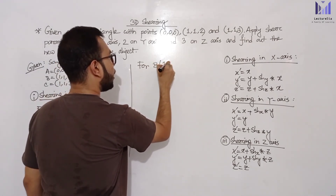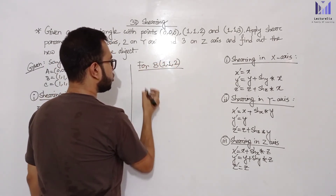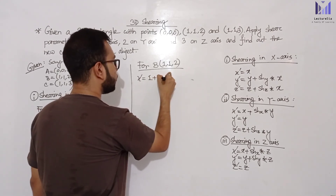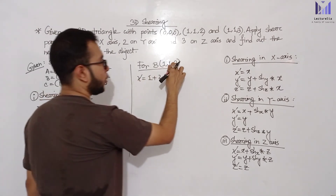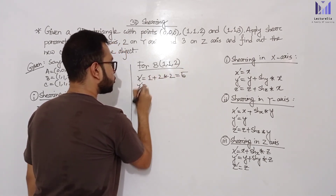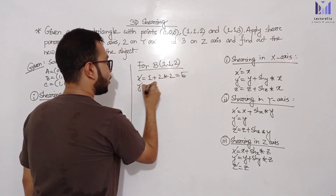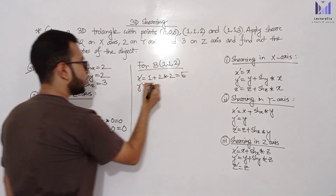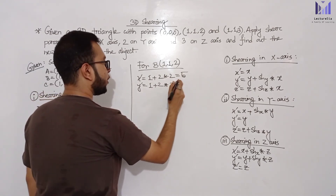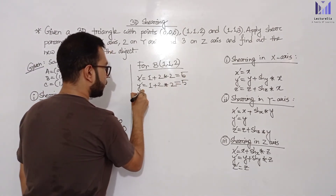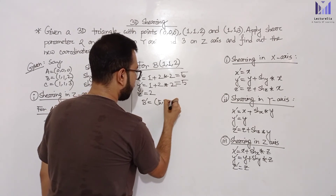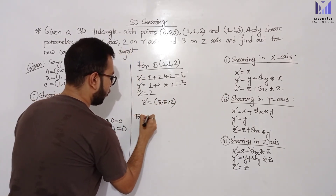For point B (1, 1, 2) under shearing in Z-axis: X prime equals X which is 1 plus shearing parameter X of 2 multiplied with Z of 2 — 1 plus 4 equals 5; Y prime equals Y which is 1 plus shearing parameter Y of 2 multiplied with Z of 2 — 1 plus 4 equals 5; Z prime equals old Z value which is 2. So B prime is (5, 5, 2).